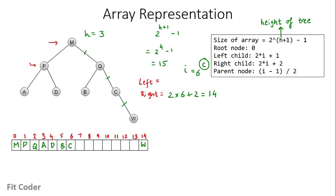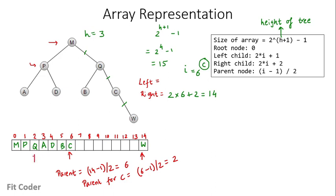This is how you can represent a tree in array form. To check the parent of any node, simply use index (i-1)/2. For W at index 14, the parent is at (14-1)/2 = 6, which is C. For C at index 6, the parent is at (6-1)/2 = 2, which is Q. In this manner we can find the parent of any node.